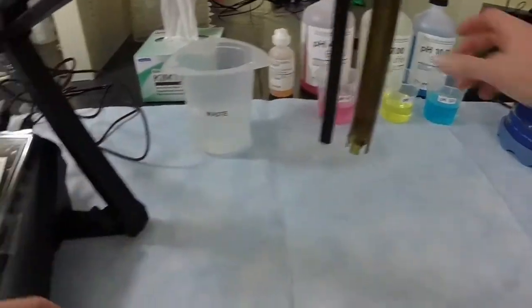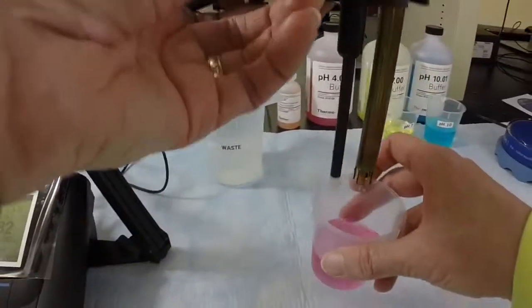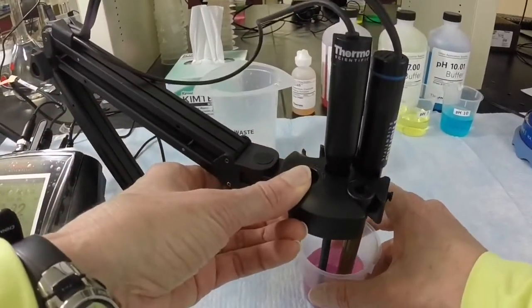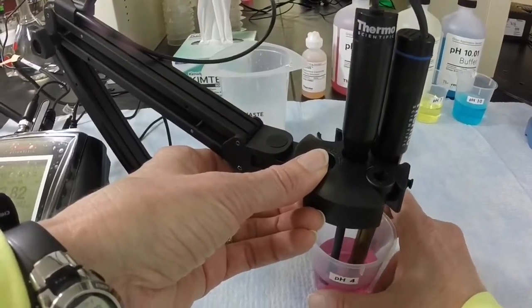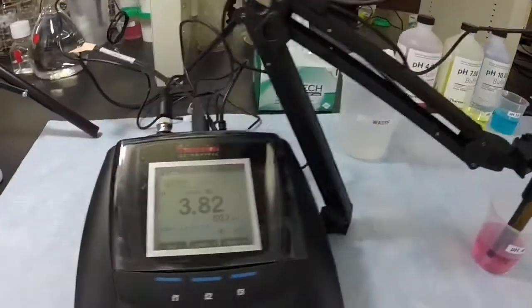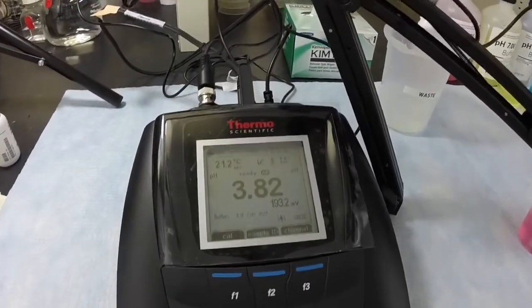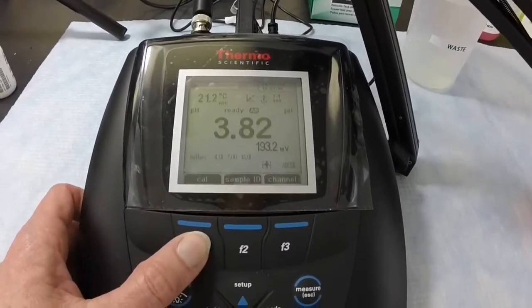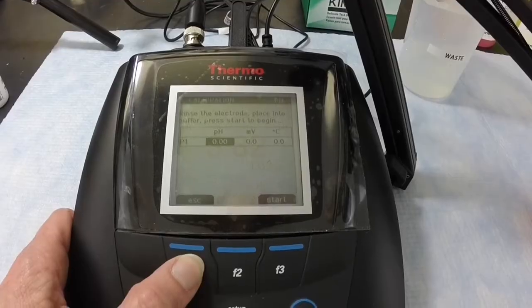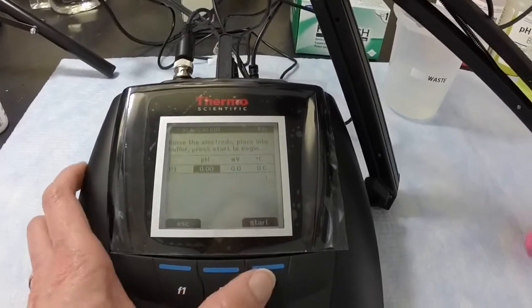Put your electrode into the first buffer. In this case, we're starting with the pH 4 buffer. Select the CAL function on the meter by pressing the F1 key. Then select START by pressing the F3 key to begin the calibration.